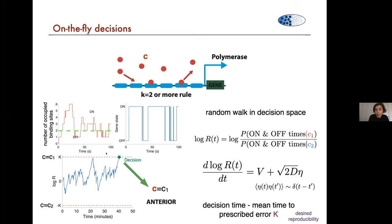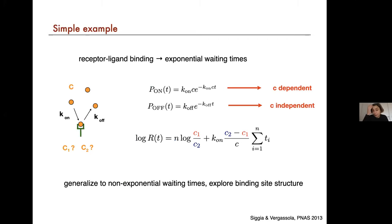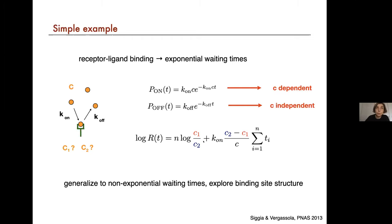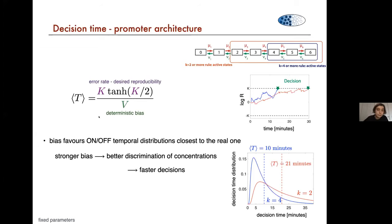To put some meat on this: if we have one receptor with a ligand binding and unbinding, we can write down the likelihood of seeing a given number of bound states at a certain time and the number of off states. Of course the on-rate is concentration-dependent and the off-rate is independent. These are two exponential processes, so we can calculate the log likelihood ratio of the on statistics and off statistics given high versus low concentration and just compare them. We want to generalize this to more complicated binding architectures and non-exponential distributions, and we can solve the mean first passage problem.